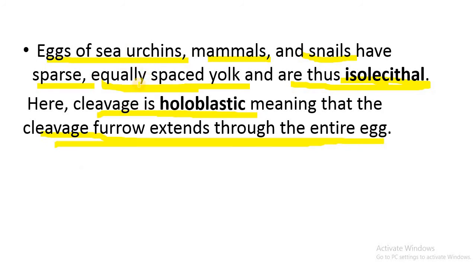Here the yolk quantity is very less. For nourishment, sea urchins and snails either have a voracious larval form — that is, a larval form which feeds on a high quantity of food. In the case of mammals, the placenta nourishes the embryo, so yolk does not play much of a role.